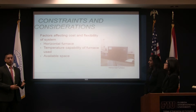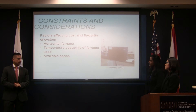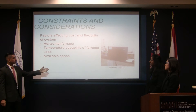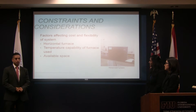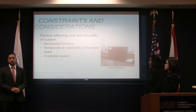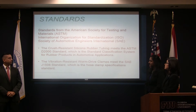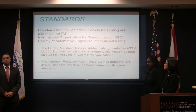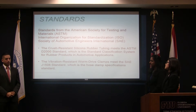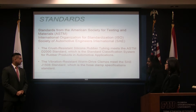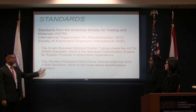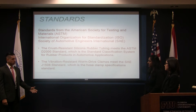The constraints and considerations that affect the cost and flexibility of our project start with the furnace pictured here. It's a horizontal furnace. Also considered are the temperature capabilities of the set horizontal furnace and the available space that we have in the lab. In this project we have to adhere to standards set forth by the ISO, SAE, and ASTM. For example, the silicone rubber tubing meets a standard set by the ASTM, and the worm drive clamps used meet a standard set by the SAE.